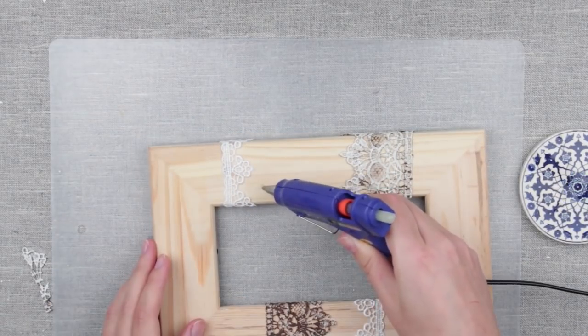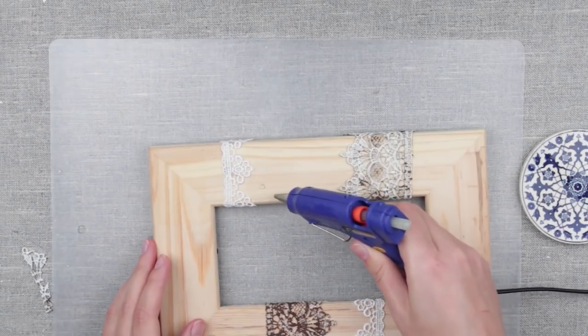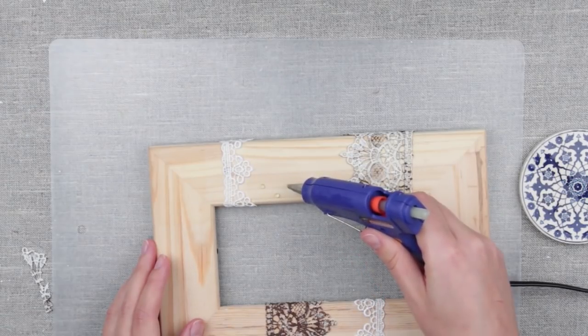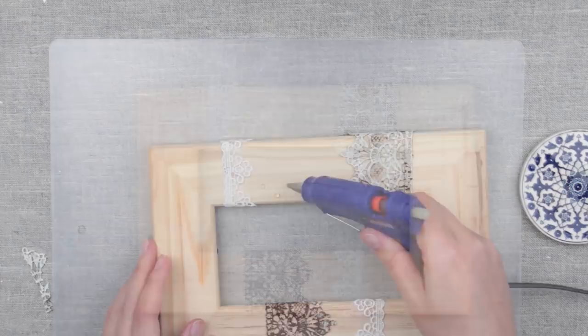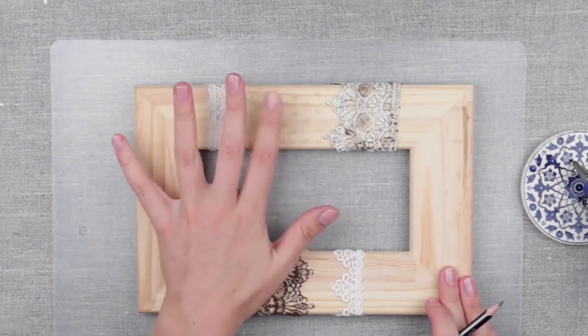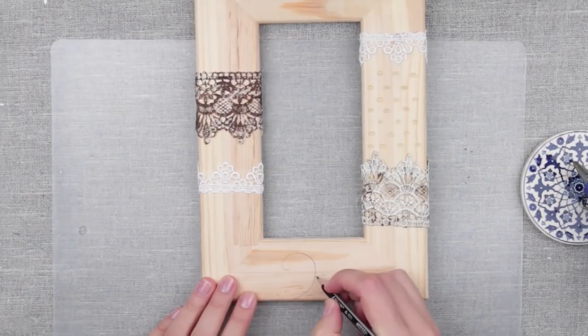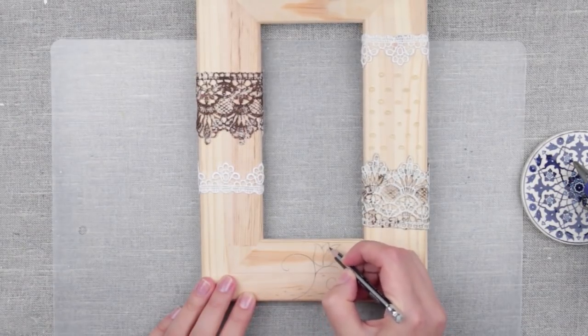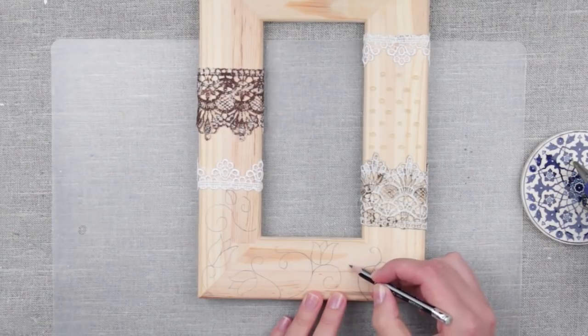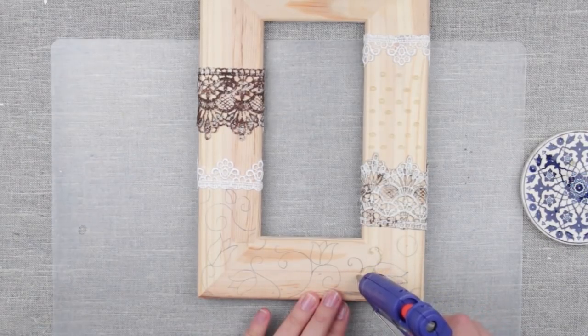Now repeat the lace ornament on the frame by squeezing hot glue to get small pea-shaped drops. Draw some motif with a pencil. Trace it with the hot glue gun.